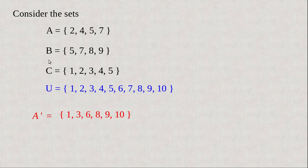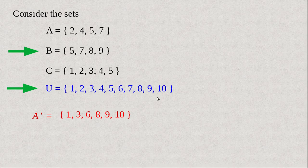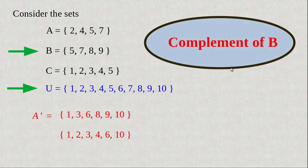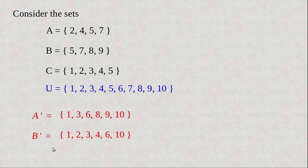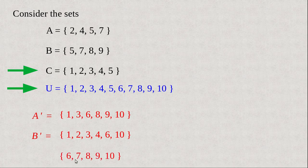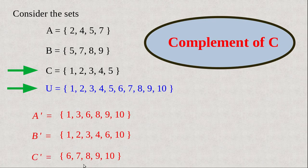In other words, A dash is equal to U minus A — the set of all elements in U not in A. Then what will be B dash, or B complement? By considering set B and U, we get B dash — the set of all elements which are in U but not in B, denoted B dash. And C dash is equal to the set {6, 7, 8, 9, 10} — elements which are in U but not in C. It is called complement of C, symbol C dash.